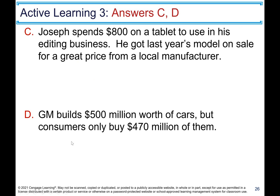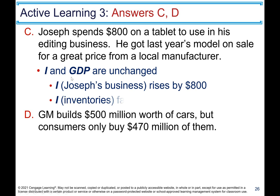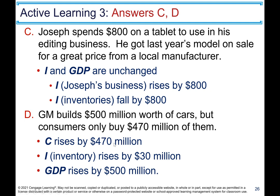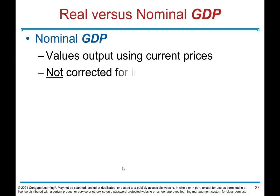Number C: Joseph spends $800 on a tablet for his editing business — last year's model from a local manufacturer. Investment and GDP remain unchanged overall: investment in Joseph's business rises by $800 and inventories fall by $800. Number D: General Motors builds $500 million worth of cars but consumers only buy $470 million. Consumption rises by $470 million, inventory rises by $30 million, and GDP rises by $500 million.